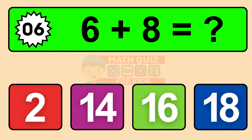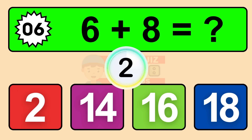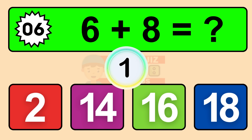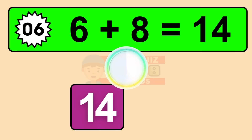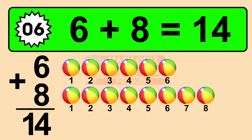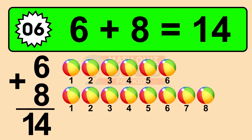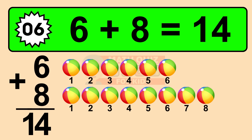Question six: six plus eight equals what? The answer is six plus eight is fourteen. Let's count it. One, two, three, four, five, six, seven, eight, nine, ten, eleven, twelve, thirteen, fourteen.